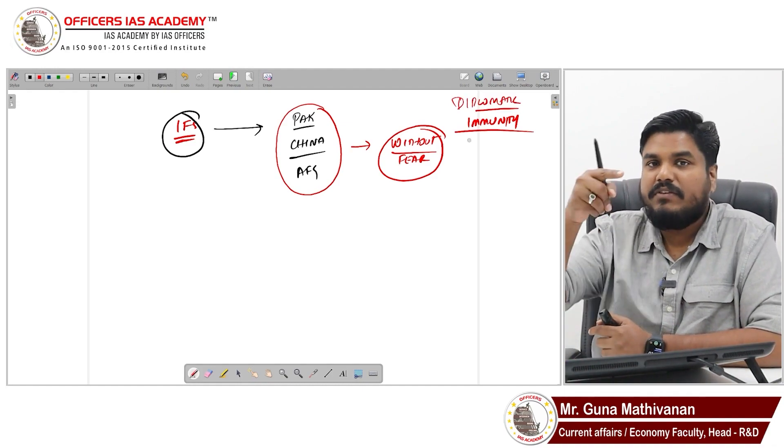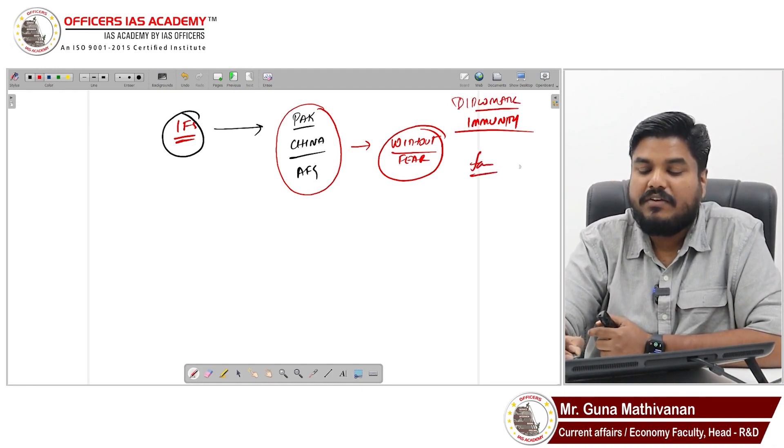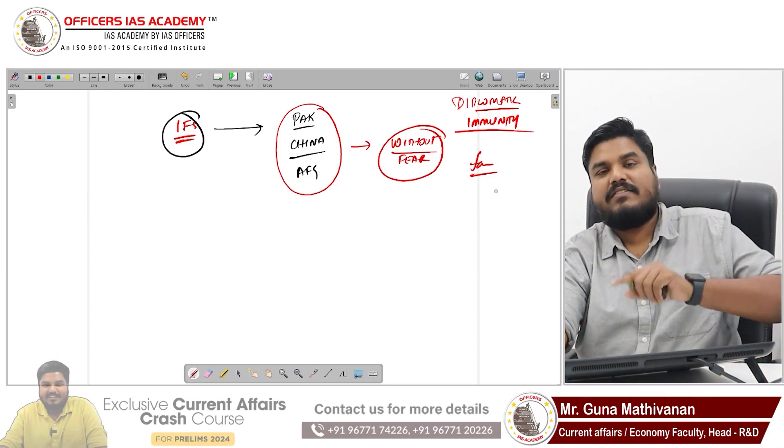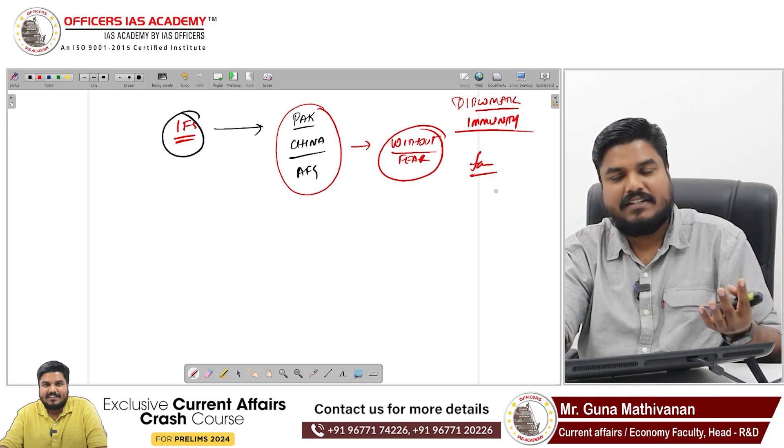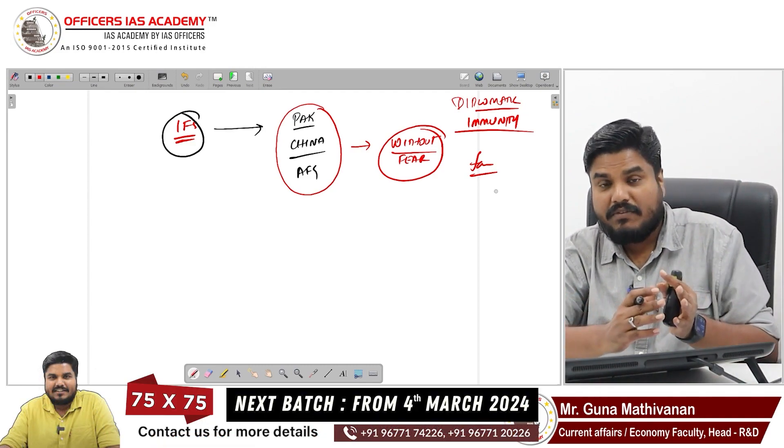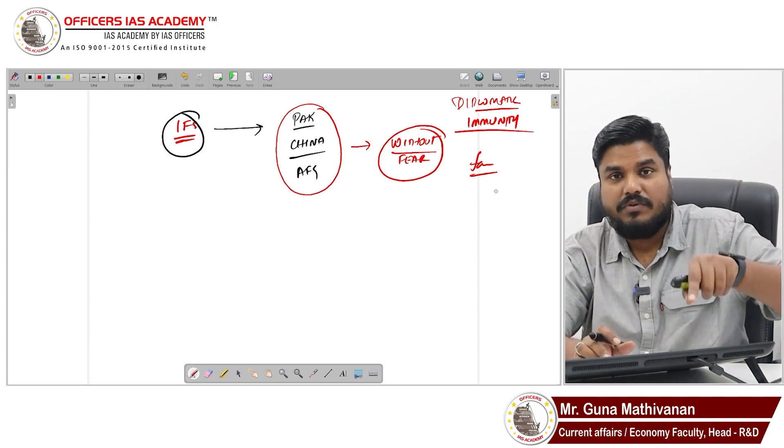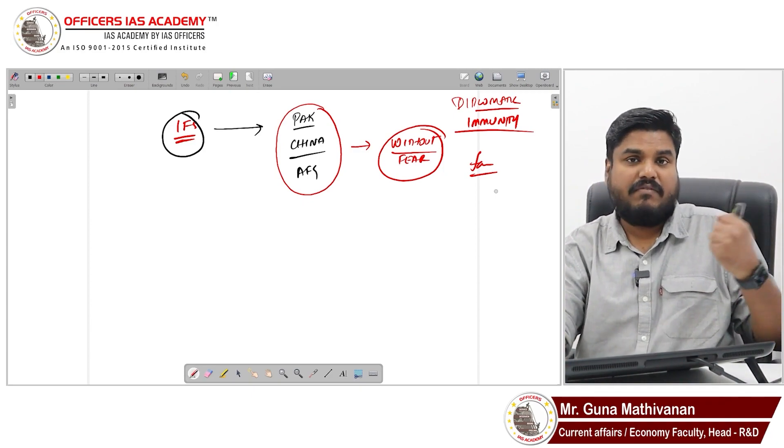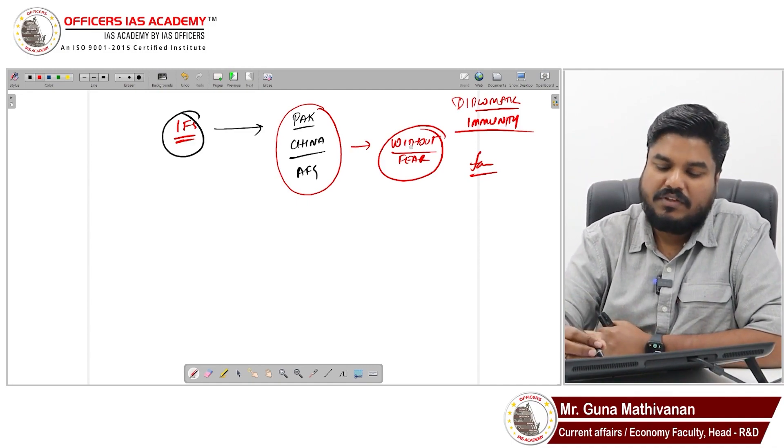This immunity should not just be for you, it should also be for your family who are staying along with you there. You serve there as a diplomat, you want to work without fear. You should be immune and your family should also be immune from certain things. You should have some additional powers.